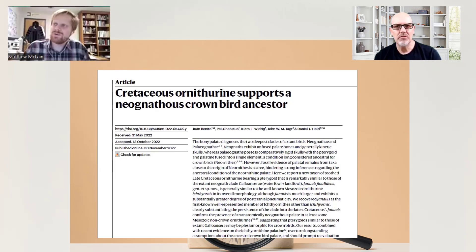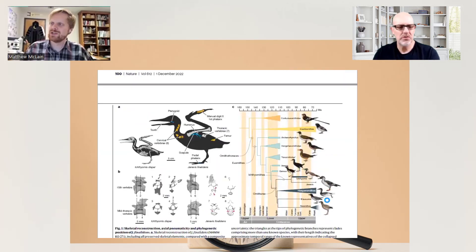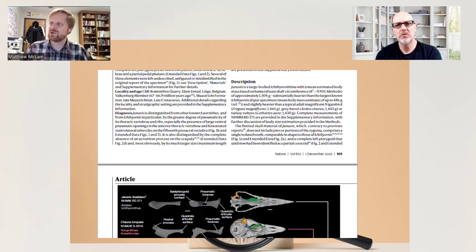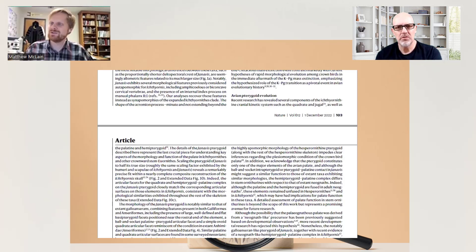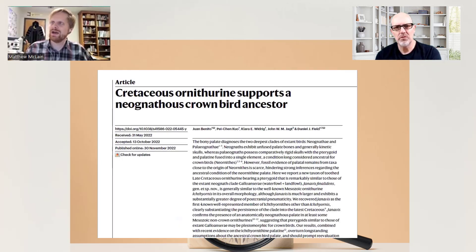So, the paper that we're looking at literally came out just a few weeks ago. Is that right? Yeah. So, just to start off with, maybe summarize what this paper is about. I don't know if you can maybe bring it up on the screen there. Yeah, I can do that. So, this is the paper right here. The paper's title is Cretaceous Ornithyrine Supports a Neognathous Crownbird Ancestor. It's by Benito et al., and it was published in Nature, which is one of the big prestigious journals.